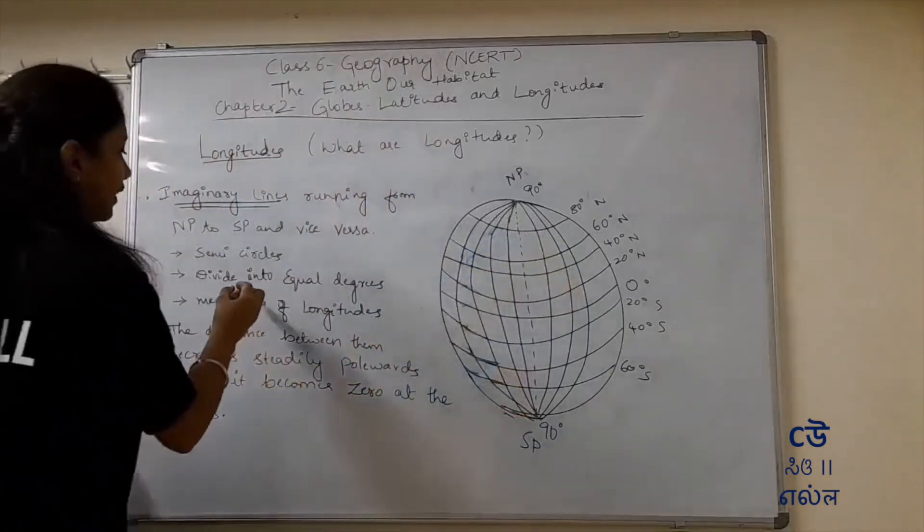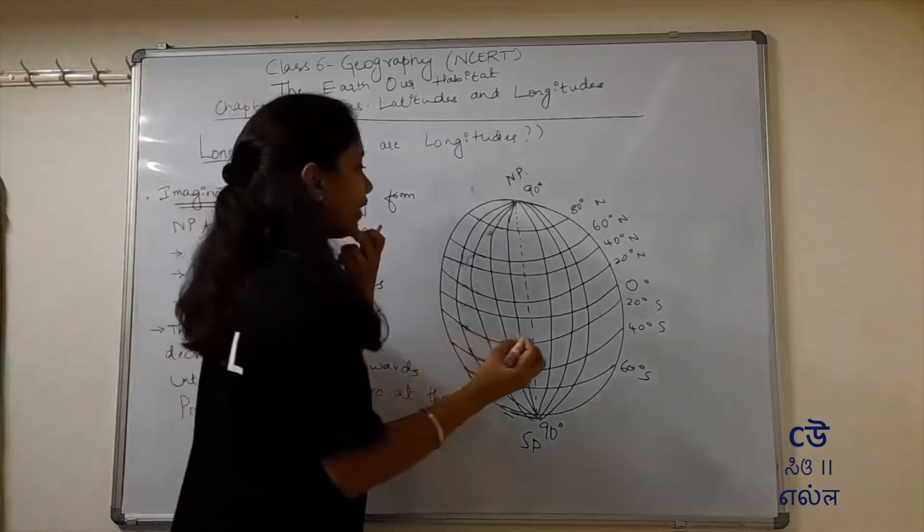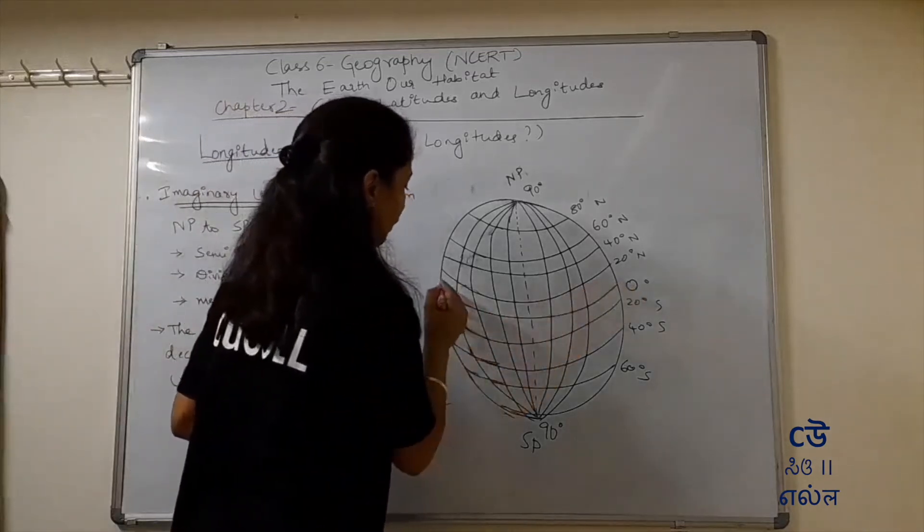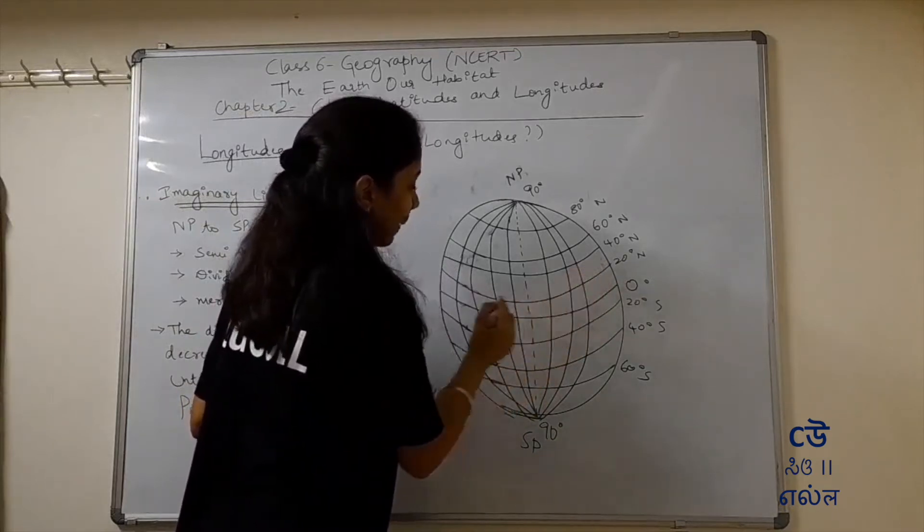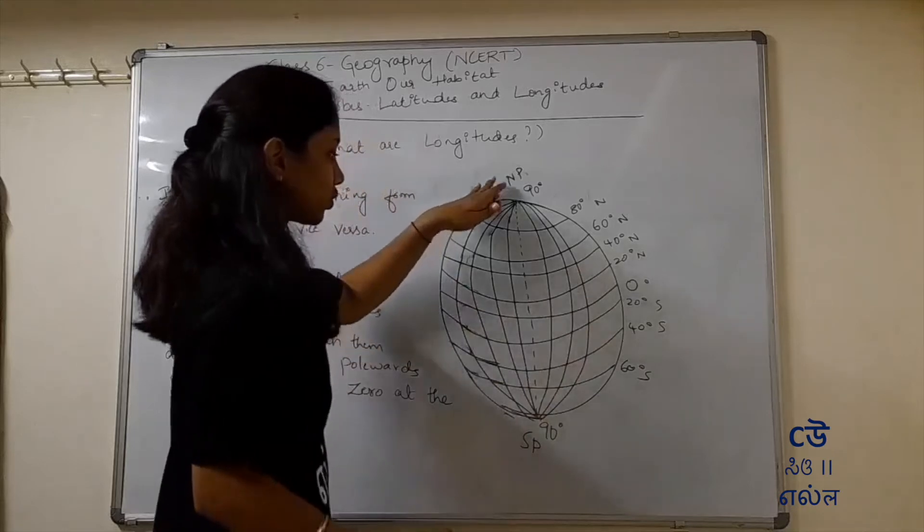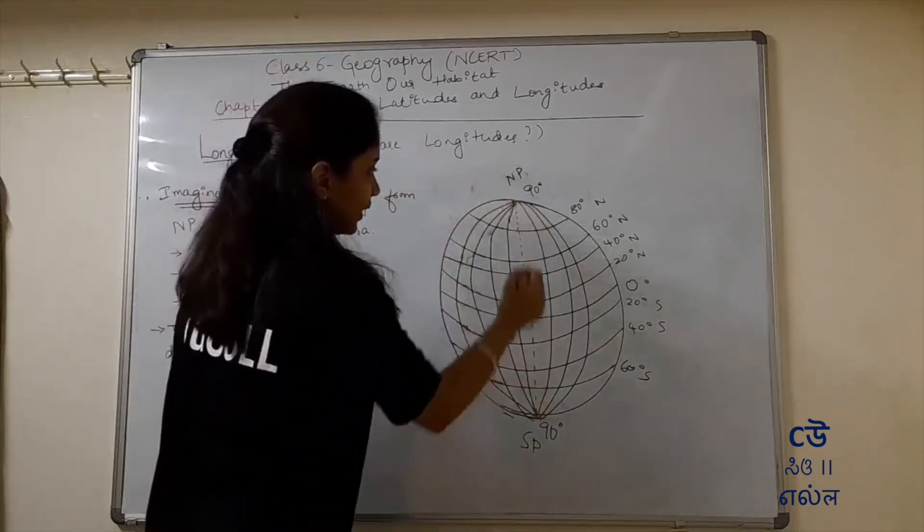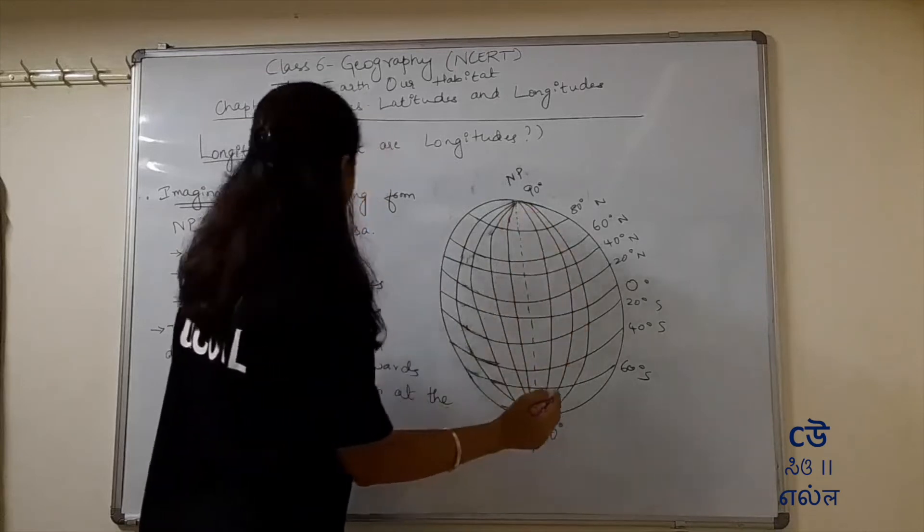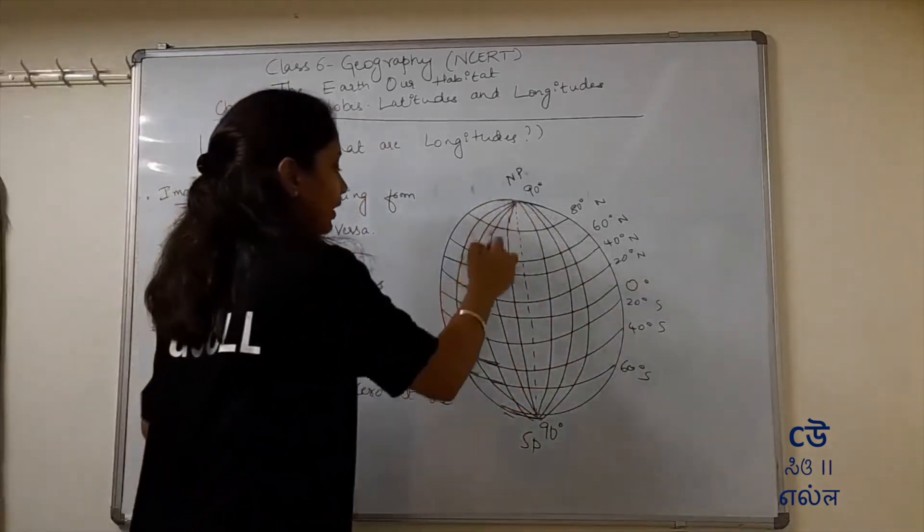And it says they are divided into equal degrees. Now in case of latitudes, from equator, one-one degree latitudes exist. Equator is parallel. Like latitudes, longitudes also are divided into degrees, one-one degree. They are divided into degrees.